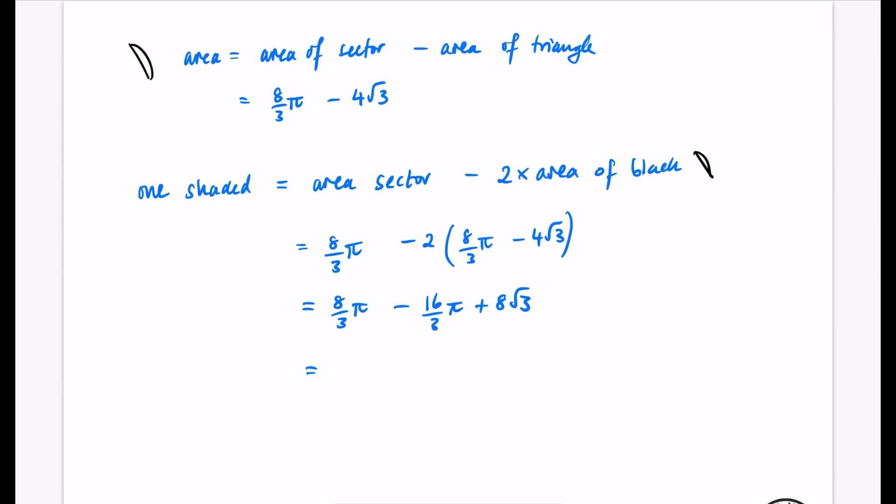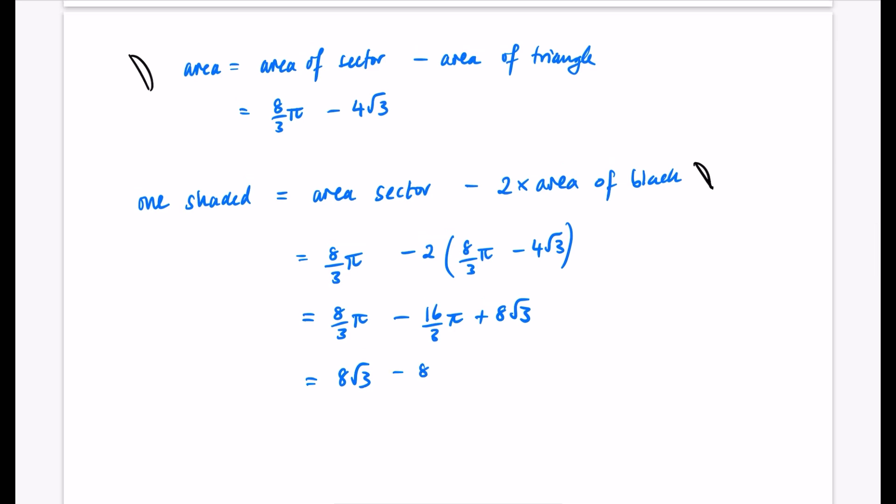So I'll start with the 8 root 3. So I have my 8 root 3. And then just think of the fractions here. I have 8 over 3 minus 16 over 3. 8 minus 16 is minus 8. So we have minus 8 over 3 pi for that part. Now, that was only for one of the shaded things.